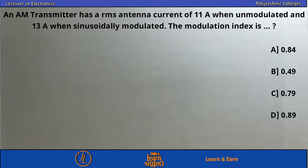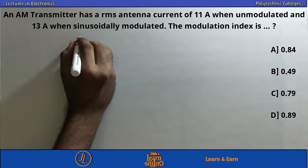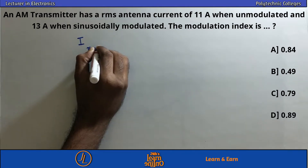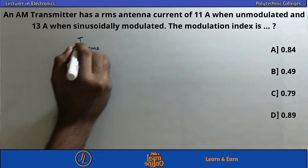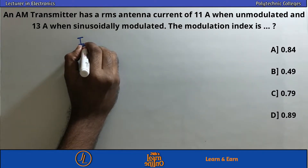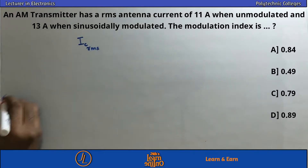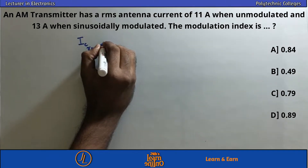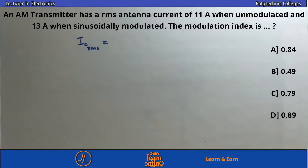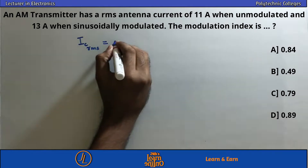The formula for modulation index relates the transmitted RMS current to the carrier RMS current. The carrier current I_C(RMS) is 11A. We will use the standard AM power relation involving I_T(RMS) and I_C(RMS).